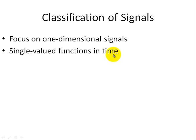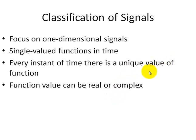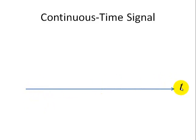What I mean is that we're going to deal with single-valued functions of time — every instant of time, there's a unique value of the function, and the value of the function can either be real or complex. So let's start off with a continuous time signal, where it is defined for all time T. We have the horizontal axis representing time T, and the vertical axis X of T, which can either be a voltage or a current.